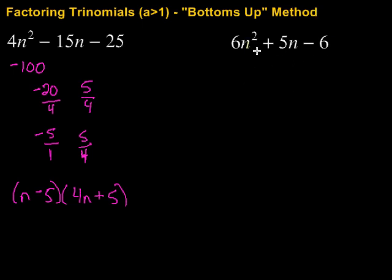Let's do one more. Again, first step, check to see if there's anything that we can pull out. Again, in this case, there isn't. So we're just going to go ahead and start our AC or our bottoms up method. So multiply A times C. 6 times negative 6 would give me negative 36.